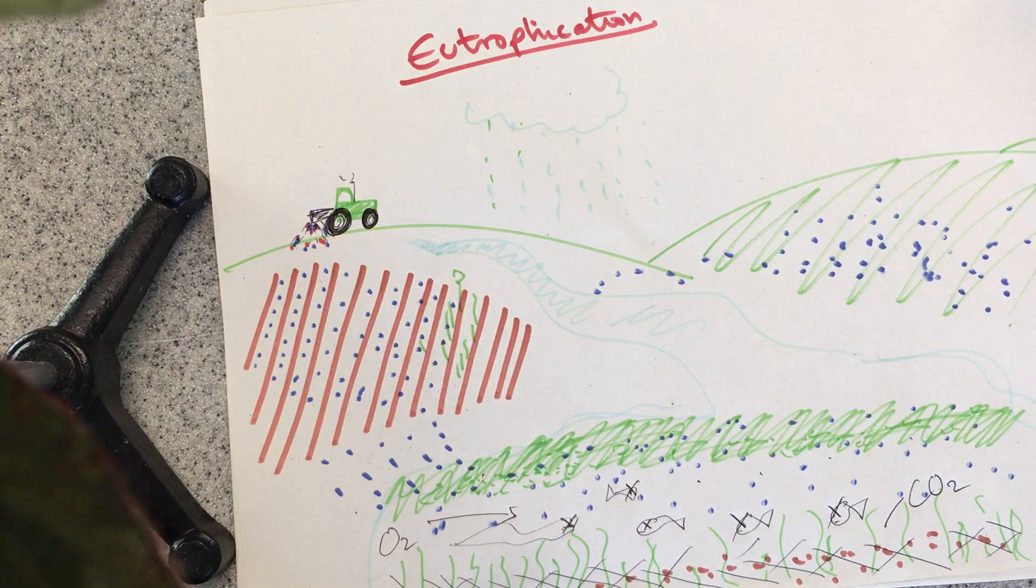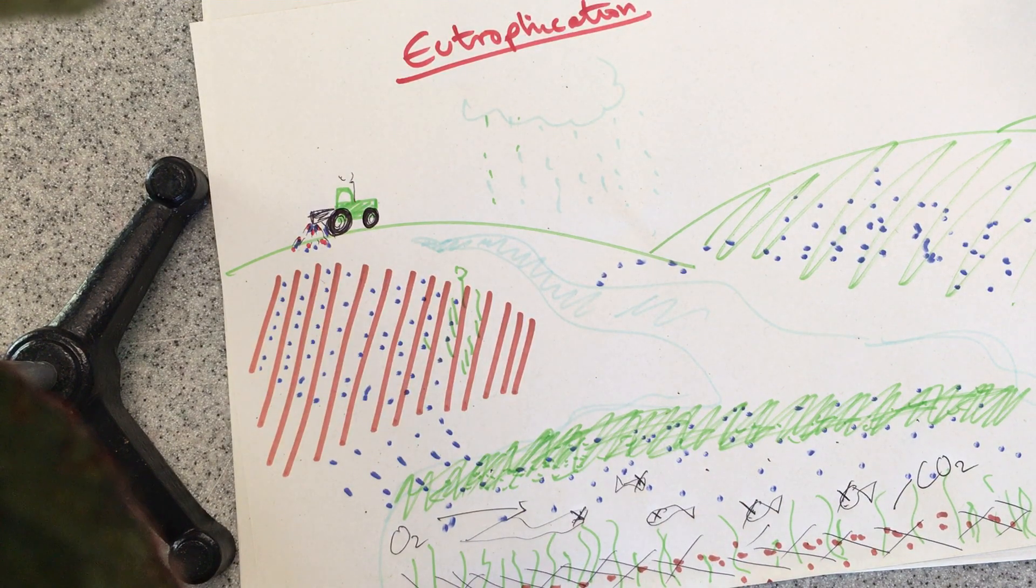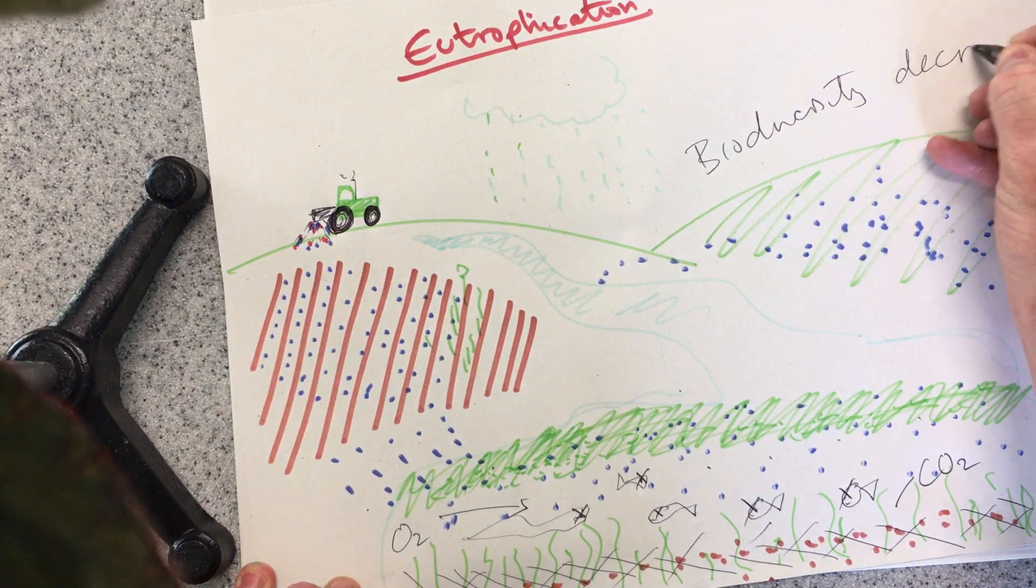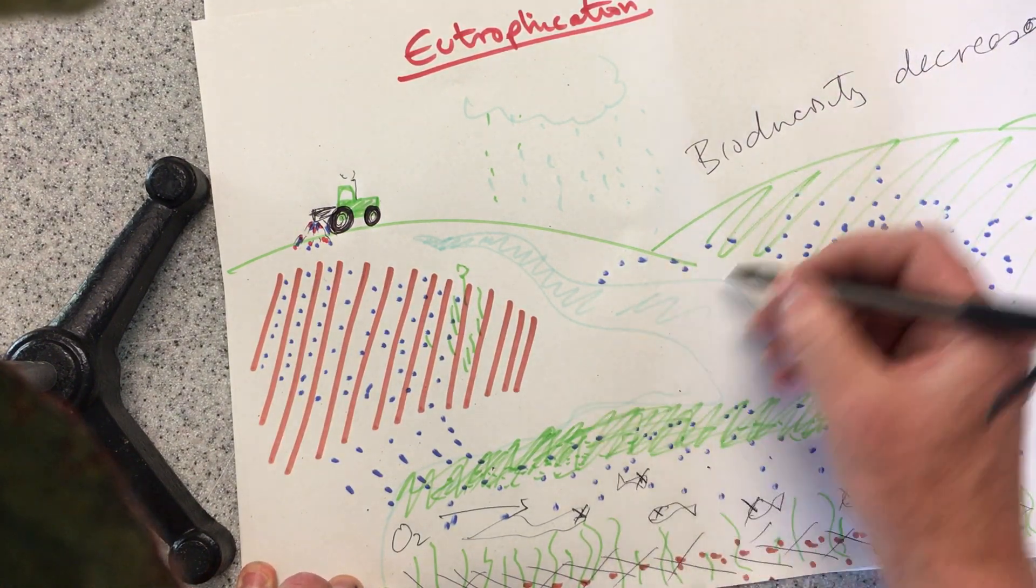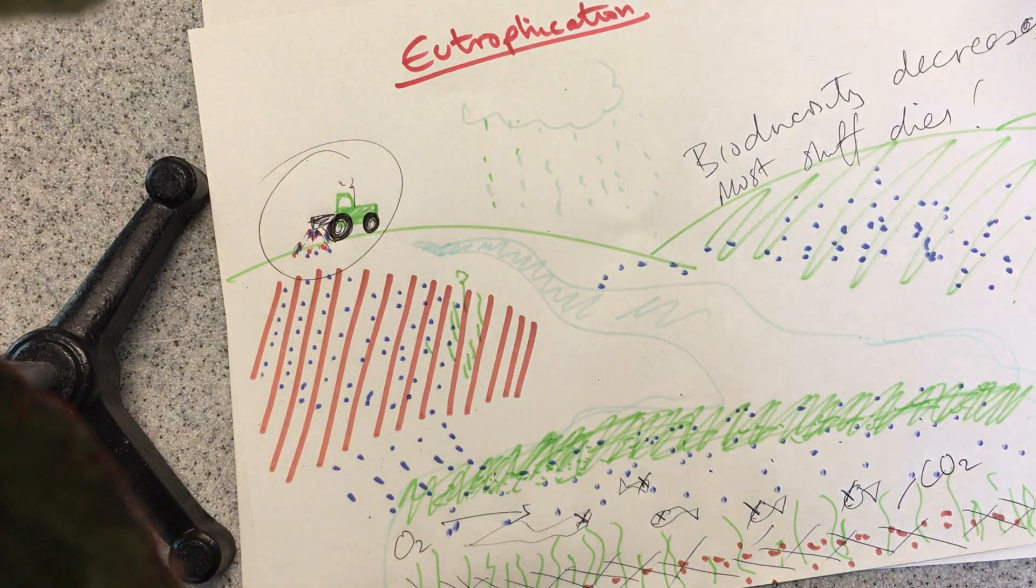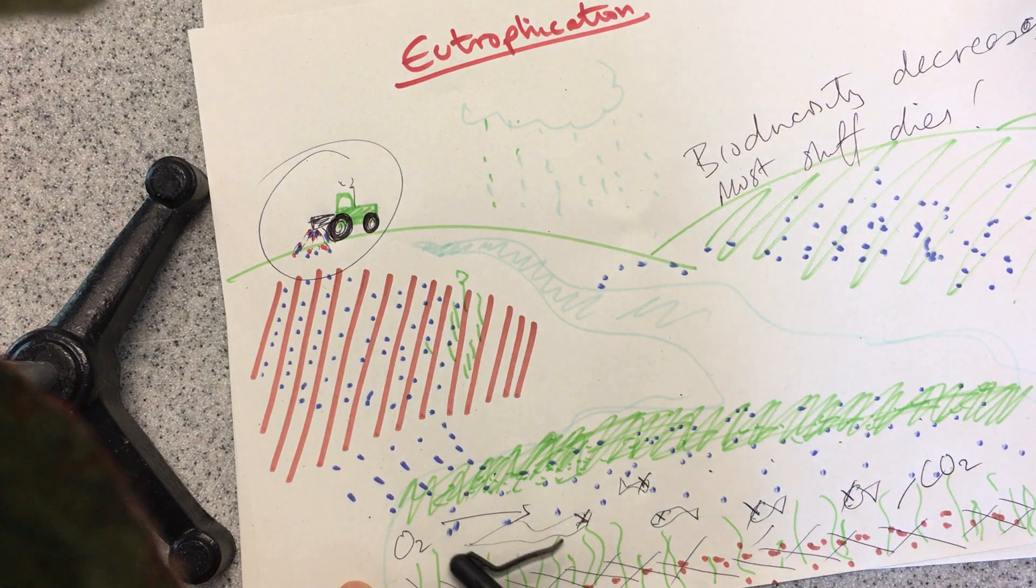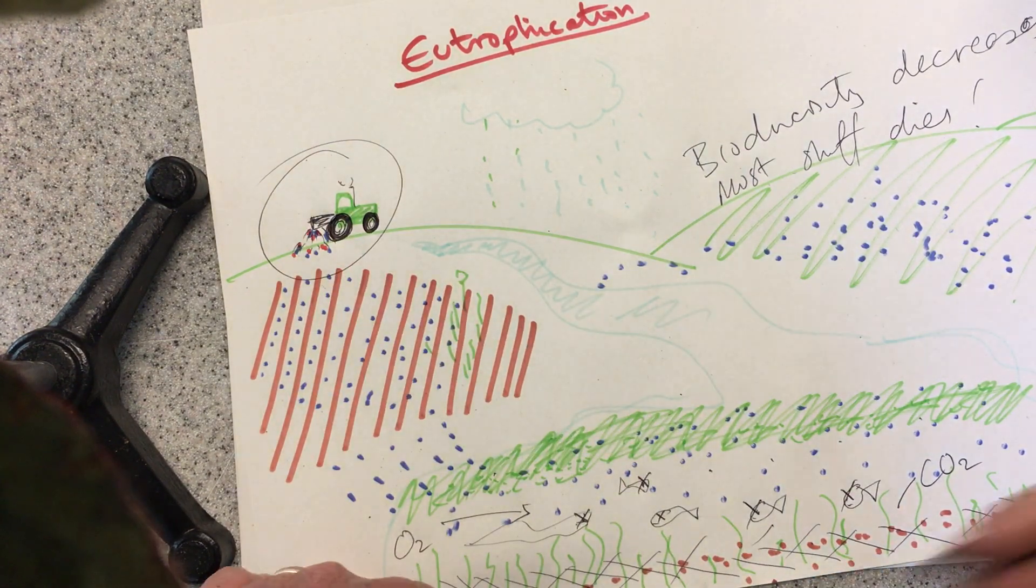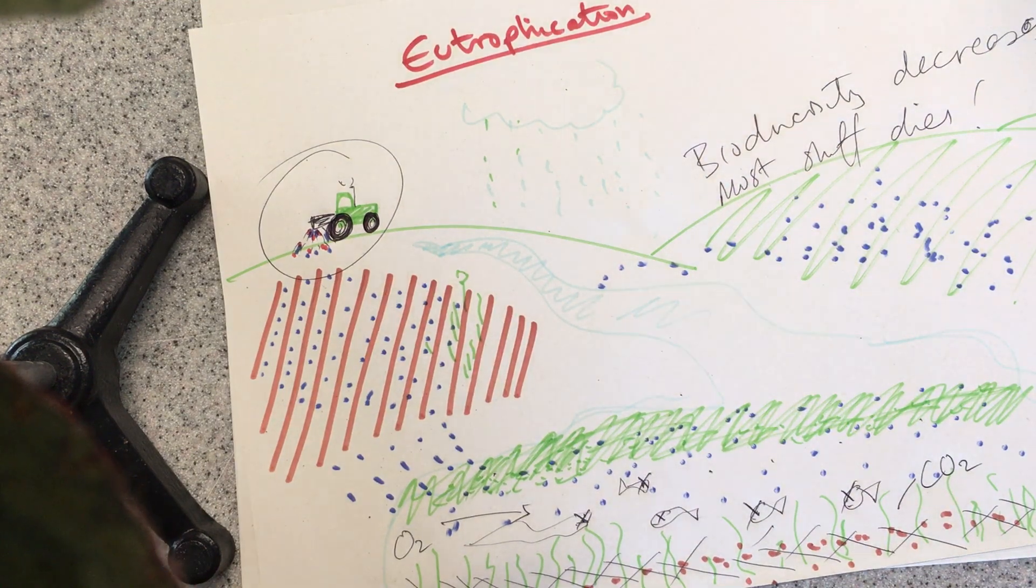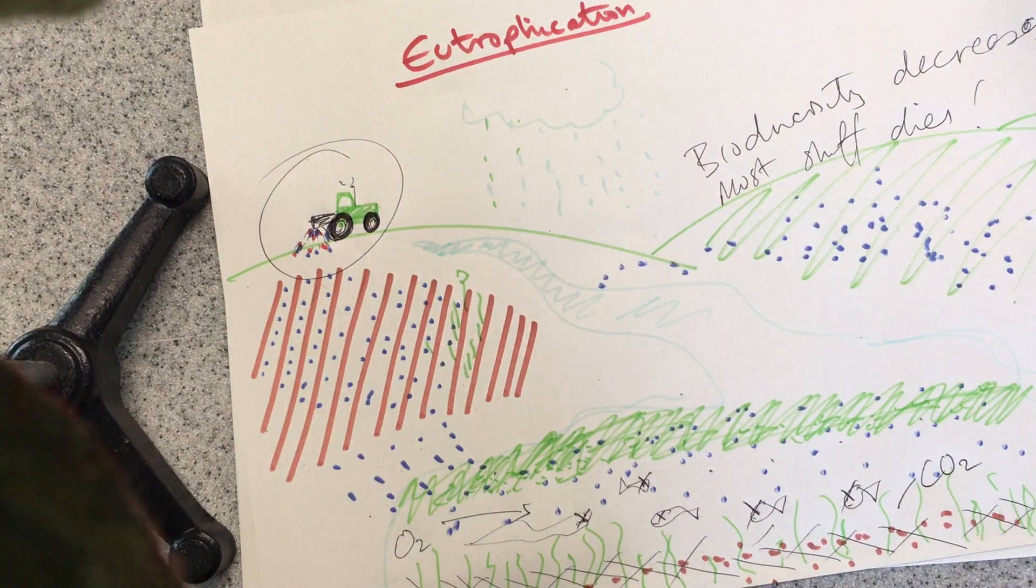So then we end up with a dead pool. So this now leads to a thick layer of algae on top and nothing else. So biodiversity decreases. Most stuff dies. All because of this guy. And this might be miles away. This stuff might be a farm in the Amazon rainforest. And the eutrophication may occur hundreds of miles away. So it's not always about immediate impact on your own doorstep. I've ruined my own pond. It's about damaging environments elsewhere, affecting biodiversity. Alright, that's that.